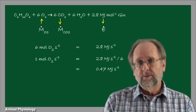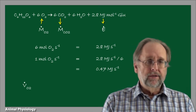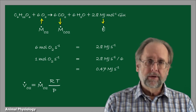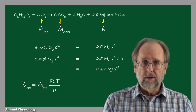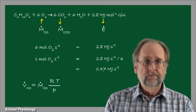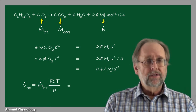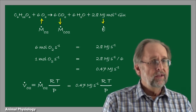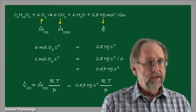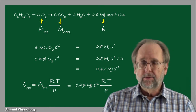In practice, oxygen consumption rate is more easily measured as a volumetric oxygen consumption rate, V̇ sub O2. That can be related to molar consumption rate of oxygen by the ideal gas law: specifically, the product of molar consumption rate of oxygen and the ratio of the universal gas constant R, absolute temperature T, and pressure P gives the volumetric consumption rate. This stoichiometric relationship allows us to substitute molar consumption rate of oxygen with its equivalent energy production rate of 0.47 megajoules per second, giving a direct relationship between volumetric oxygen consumption rate and energy production rate of metabolism.